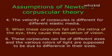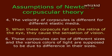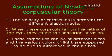The velocity of corpuscles is different for different elastic media. When these corpuscles fall on the retina of the eye, they cause a sensation of vision. These corpuscles can be of different sizes, and the various colors of light are supposed to be due to differences in their sizes.